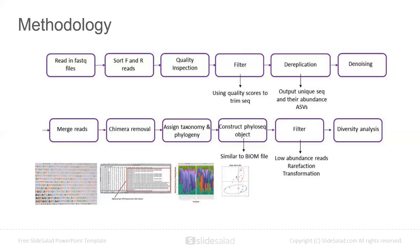Next comes quality inspection, then filtration, which uses quality scores to trim sequences. After that, dereplication provides the output of unique sequences along with their abundances. This is followed by denoising, then merging reads, then removal of chimeras, assigning taxonomy and phylogeny to the reads, and construction of the phyloseq object, which can also be utilized in R.